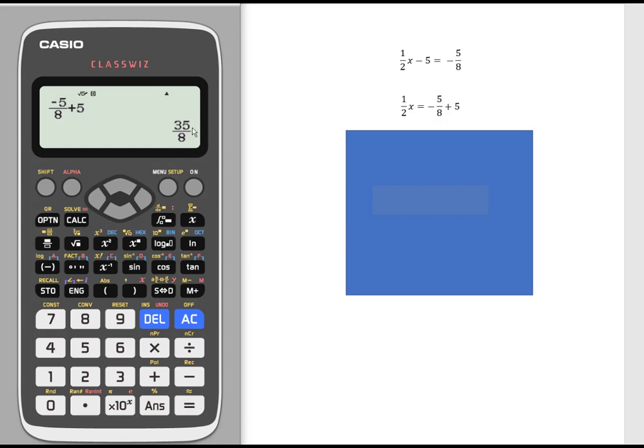When I hit equals I'm going to see the solution. Now the solution is in simplified fraction form, and you'll notice that this is an improper fraction. I could, if I wanted to see the mixed number version of that form, hit shift standard to decimal, and it would show me that this is really 4 and 3/8.